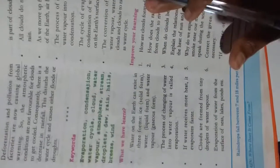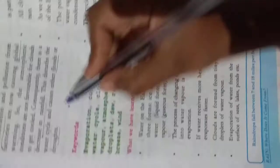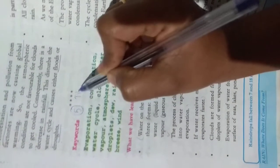Yeh sab words ka spellings aap ko ana. So you have to write these keywords five times as the assignment.